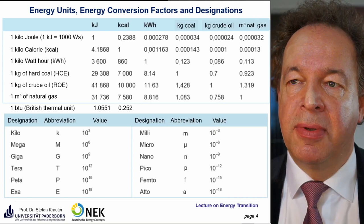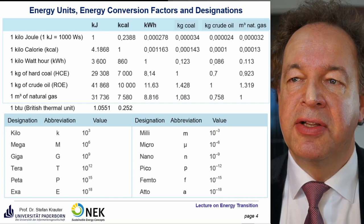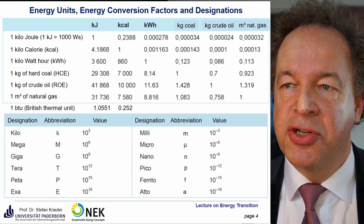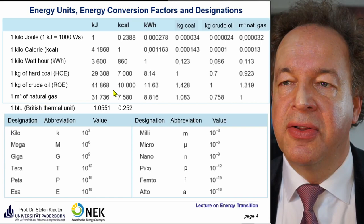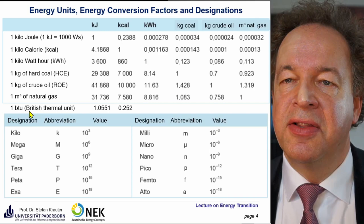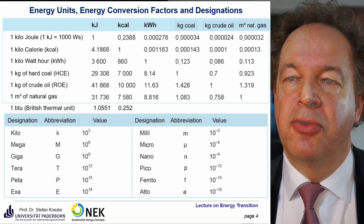In tables like the BP Energy World Outlook, you still find energy units related to fossil fuels such as the burning value of kilogram coal equivalent, crude oil, or cubic meters of natural gas. There are conversion factors to translate between these units. At air conditioners, you still find the British thermal unit, which is about equivalent to 1000 kilojoules.